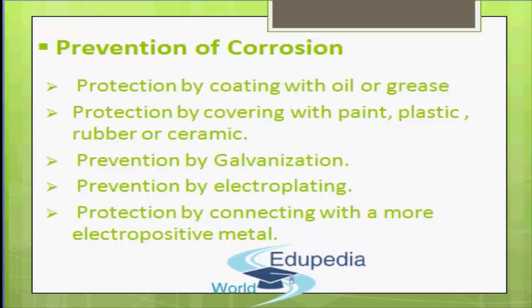This method of prevention of corrosion is called sacrificial protection. Galvanization is done by dipping the iron or steel article in molten zinc and then taking it out. The fourth method is prevention by electroplating — corrosion is prevented by electroplating iron with a more resistant metal such as chromium or nickel.